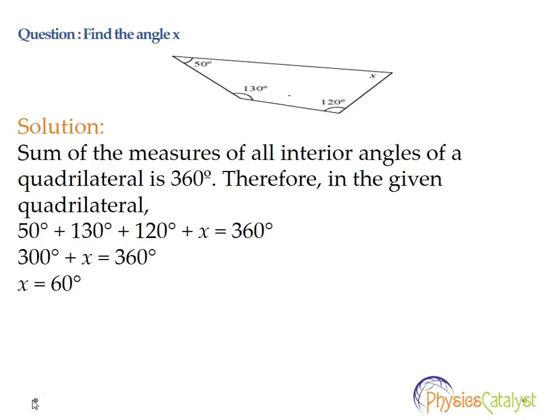We know the three angles and need to find the fourth angle, so we can write the equation as 50 plus 130 plus 120 plus X equals 360. Simplifying that, we get 300 plus X equals 360. Transposing 300 to the 360 side, we get X equals 60, so X equals 60 degrees is the fourth angle.